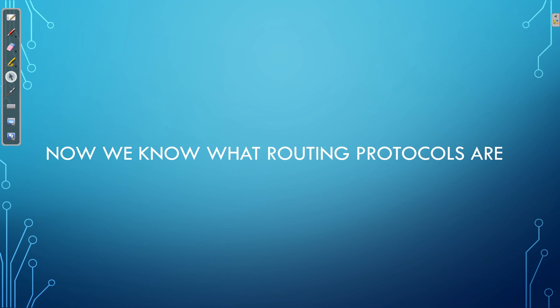We have reached the end of this video, and we've discussed dynamic routing protocols in good depth. To recap: dynamic routing protocols allow our devices to all speak to each other, allow our routers and layer 3 switches to speak to their neighbors, discover the best routes to every single network, and put those routes into the routing table. We also looked at the two different types of routing protocols — IGPs and EGPs — and when we would use either one. If you found this video useful and would like to see more content like this, please subscribe to my channel, and thank you very much for watching.